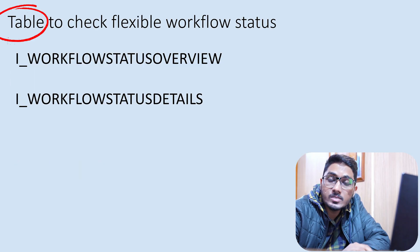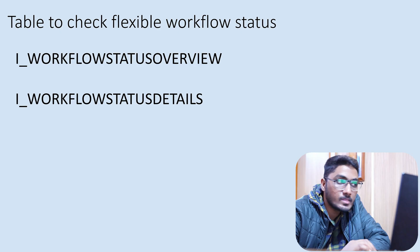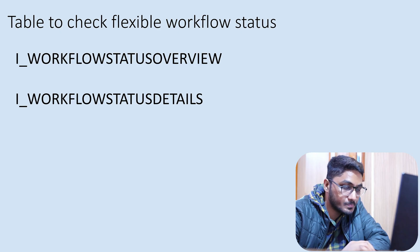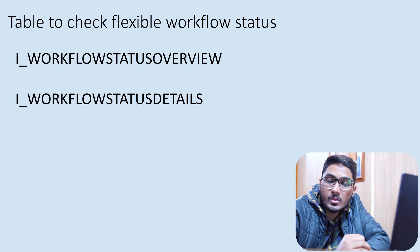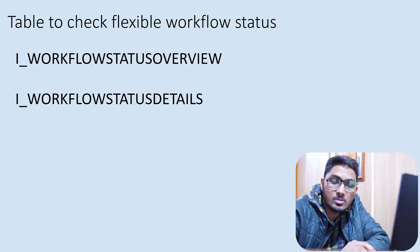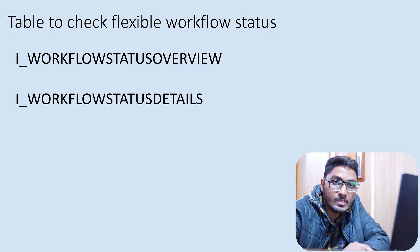There are also two tables you can use to check the status of the flexible workflow. In these tables, maintain the task ID, workflow number, and document number — you will get details on who approved, what the current status is, and all related information.